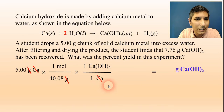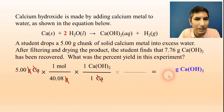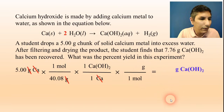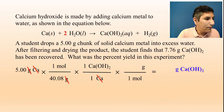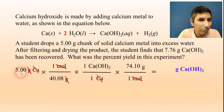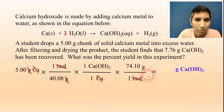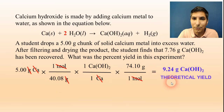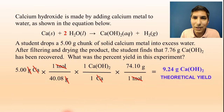Now convert to grams of calcium hydroxide: one mole on the bottom, grams on top. The molar mass of calcium hydroxide is about 74.10 grams per mole. Taking 5.00 ÷ 40.08 × 74.10, the theoretical yield is 9.24 grams of calcium hydroxide.